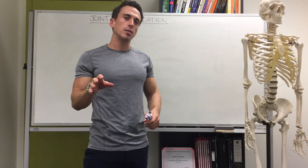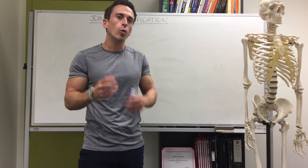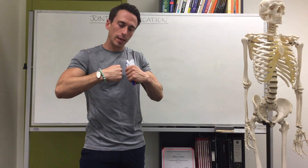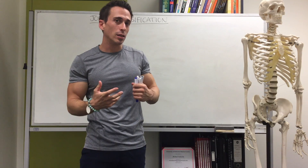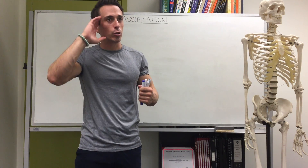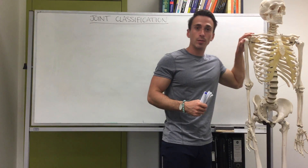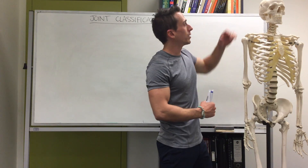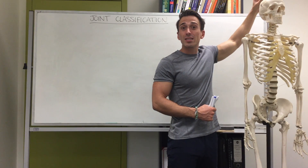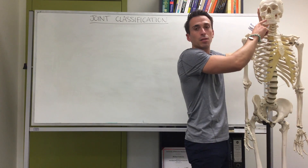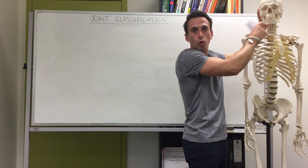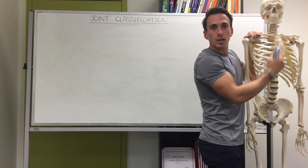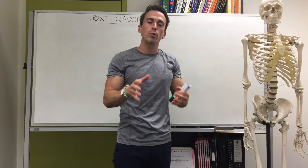Frank and I are going to discuss joints very quickly. A joint, or articulation, is where bones connect, or where bones connect with cartilage. You can think of common joints like the shoulder, knee, or hip joint, but there are many different types of joints — such as those that hold the bones of the skull together, the joints that hold your teeth in your jaw, or the joints that hold your ribs to your sternum.